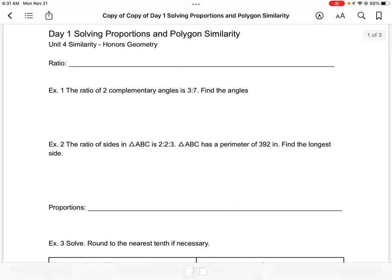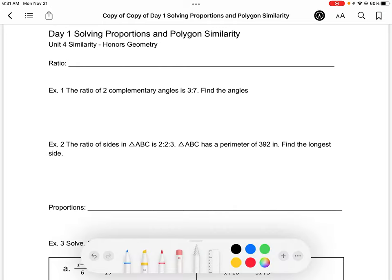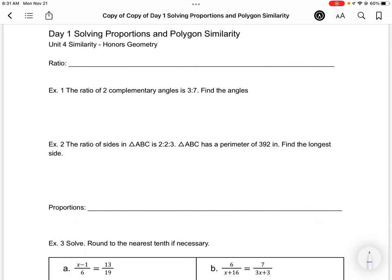The first thing we want to look at is what a ratio is. A ratio is simply a comparison of two or more numbers using division. We can write ratios as fractions, using the word 'to' like a to b, or we could write ratios using a colon to replace the word 'to'.